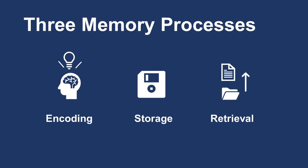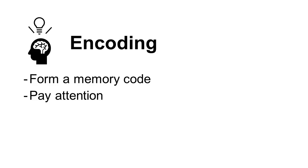There are three processes involved in memory: encoding, storage, and retrieval. Let's say that you need to remember Albert Bandura and his contributions to observational learning. First, you need to pay attention to this information. This allows you to encode it.